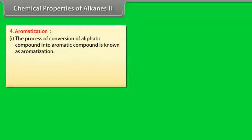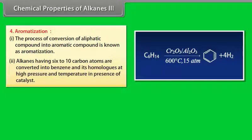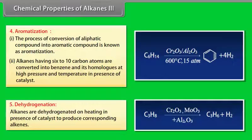Chemical properties of alkanes part 3: 4. Aromatization: The process of conversion of aliphatic compound into aromatic compound is known as aromatization. Alkanes having 6 to 10 carbon atoms are converted into benzene and its homologues at high pressure and temperature in presence of catalyst. 6. Dehydrogenation: Alkanes are dehydrogenated on heating in presence of catalyst to produce corresponding alkenes.